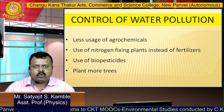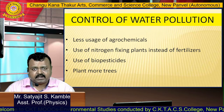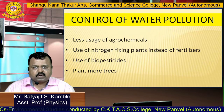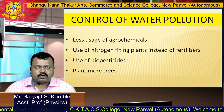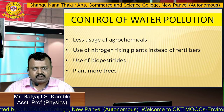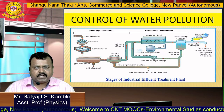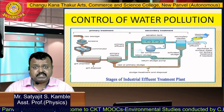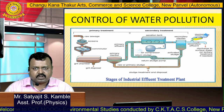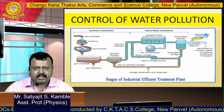We can control water pollution by using fewer agrochemicals, by using nitrogen-fixing plants instead of fertilizers, and by using more biopesticides which are very safe — for example, neem extract. We can also reduce water pollution by planting more trees. Water that is already contaminated can be purified using certain technical devices, and all industries need to have water treatment plants in their premises.